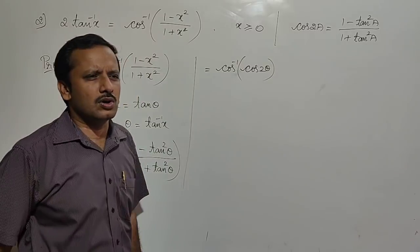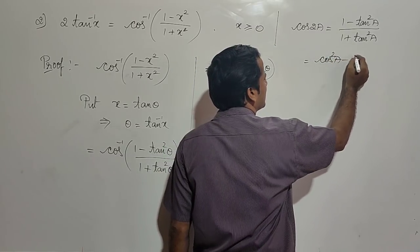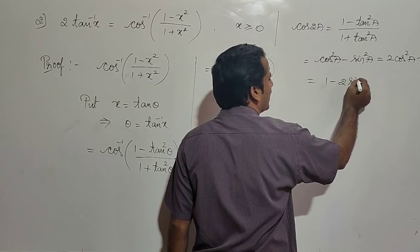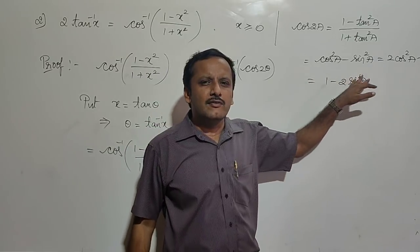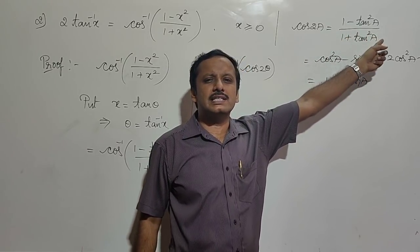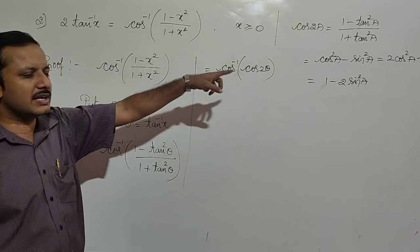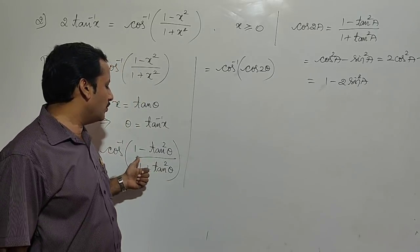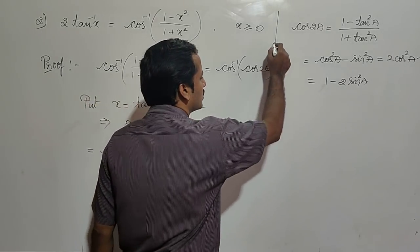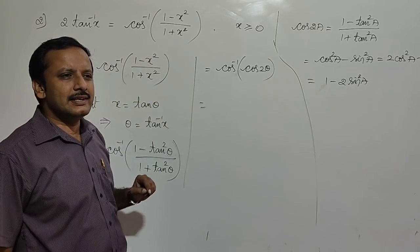The different formulae for cos 2θ are: cos²θ - sin²θ, or 2cos²θ - 1, or 1 - 2sin²θ, or (1 - tan²θ)/(1 + tan²θ). Using this last formula, (1 - tan²θ)/(1 + tan²θ) = cos 2θ. So the expression becomes cos⁻¹(cos 2θ). The formula cos⁻¹(cos y) = y holds only when y ∈ [0, π].